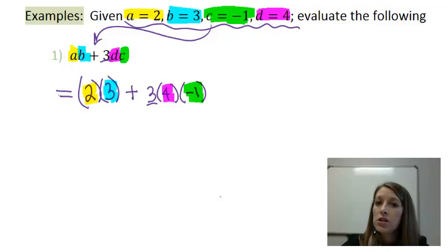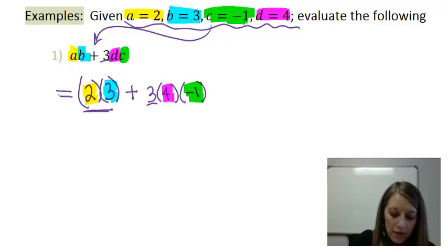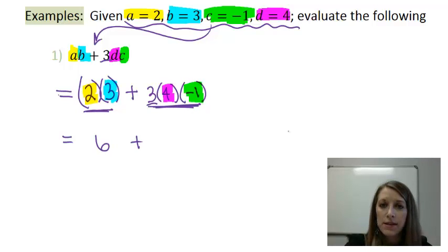From here, just PEMDAS again, order of operations. I have multiplication. And now that we've seen the commutative and associative properties, we know that we can do this multiplication in pretty much any order. So over here on the left, 2 times 3 gives me 6. And over here on the right, I'm going to multiply all of these at the same time. 3 times 4 gives me 12. And 12 times negative 1 gives me a negative 12.